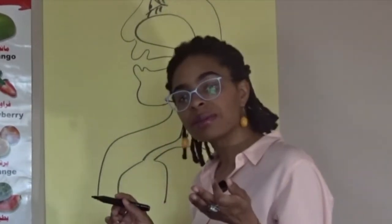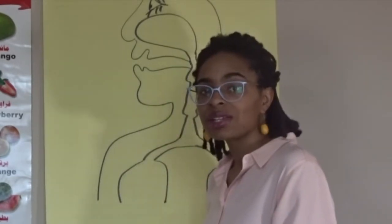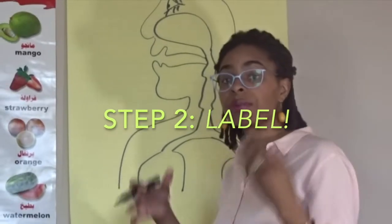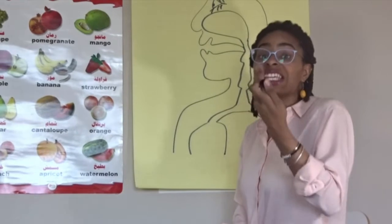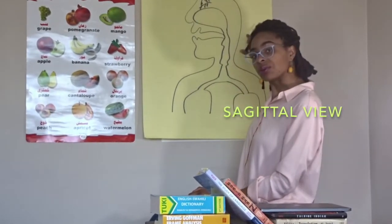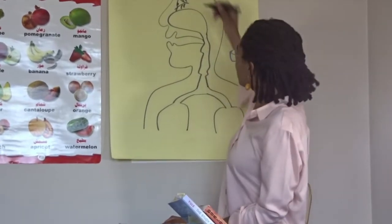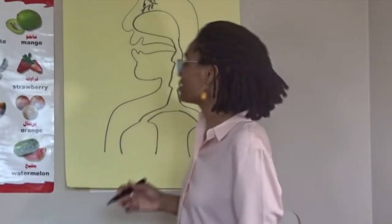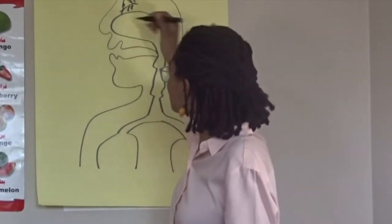An important step with our articulatory diagram is to go ahead and try to label all of the human body parts that are important for the production of sound, which we also describe as articulation. Here we have the sagittal view of the body — the sideways cut — and we've got the eyes here. We know those aren't crucial to the production of sound, but one of the things that is super important is the nasal cavity.